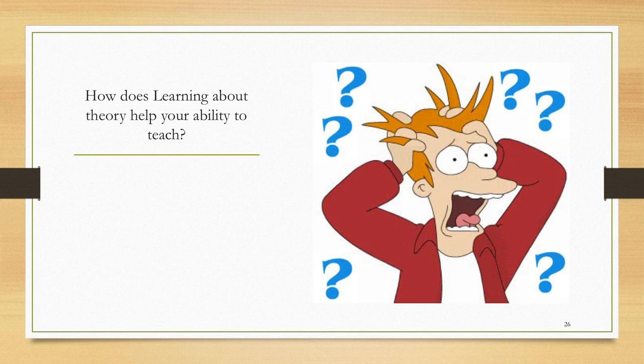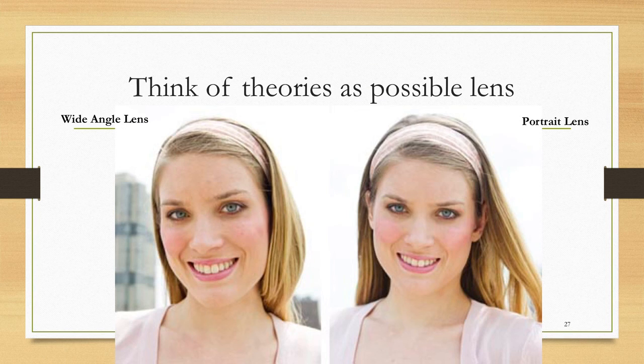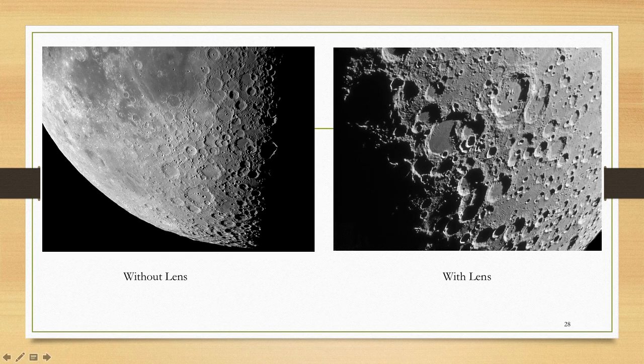How does learning about theory or research help your ability to teach? The way that I think you should think about it is think about theory as a lens. There are different lenses that we can use. If we use a wide angle lens, we have this image. If we use a portrait lens, we have this image. It changes what things become more visible. Here's another example. Without a lens, this is what I might see of the moon, but with a lens, I might get more detail. I might see things that I otherwise don't see.